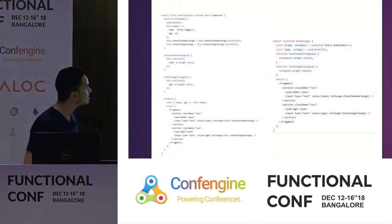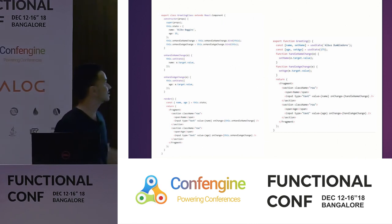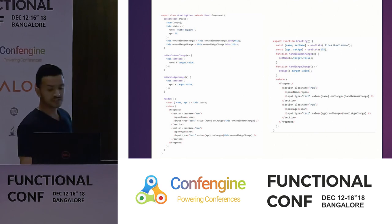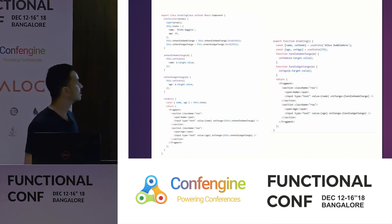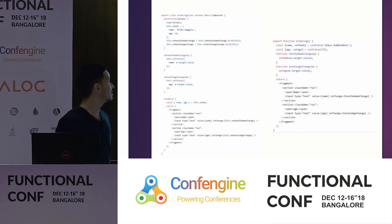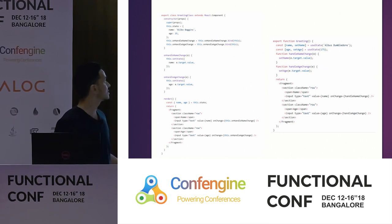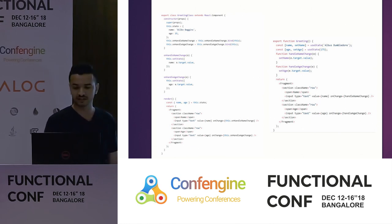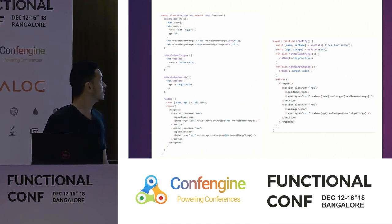On the right hand side, this is the React functional component using React Hooks. As you can see, there is definitely less number of lines of code and there is no 'this'. This is actually a dreaded concept in JavaScript classes especially, because it doesn't really work like in other languages.